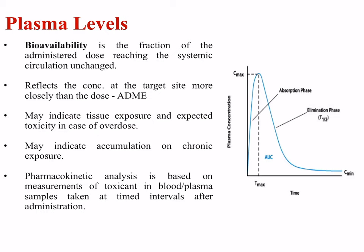Toxicologists are concerned with the levels of toxicant reaching the systemic blood supply, for which we need to know a toxicant's bioavailability. Bioavailability is the fraction of the administered dose reaching the systemic circulation unchanged, and therefore reflects the concentration at the target site more closely than the actual dose administered — it is what remains after the processes of ADME. It may also indicate tissue exposure, expected toxicity in cases of overdose, and potential accumulation on chronic exposure. Analyses are based on measurements of toxicant in blood or plasma samples taken at timed intervals after administration.